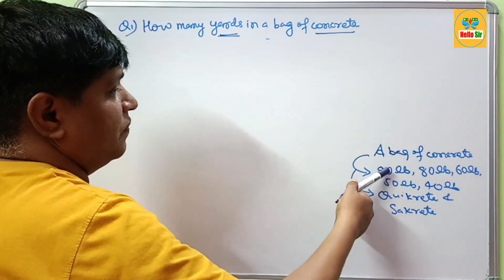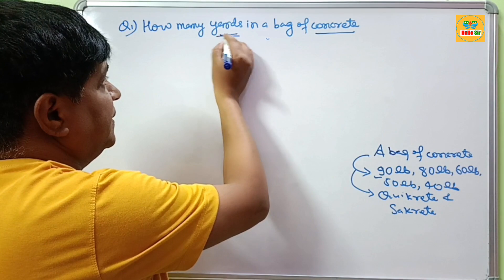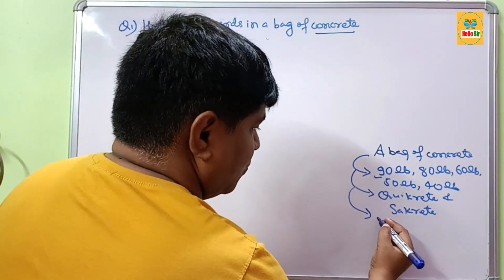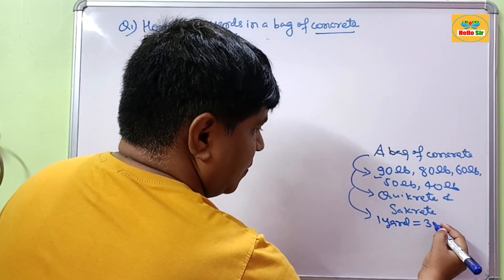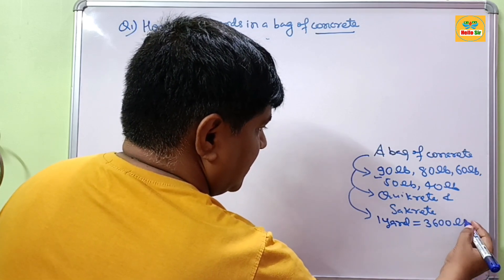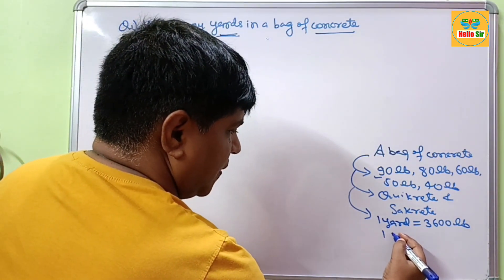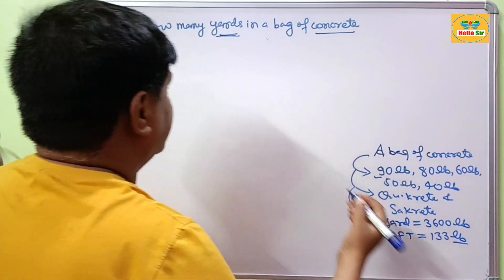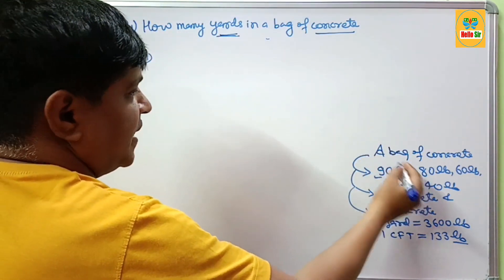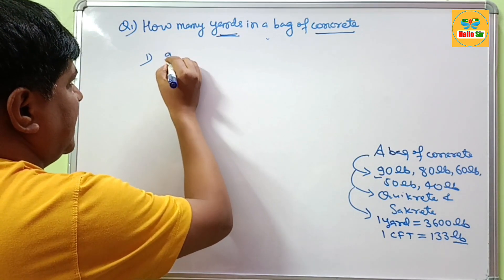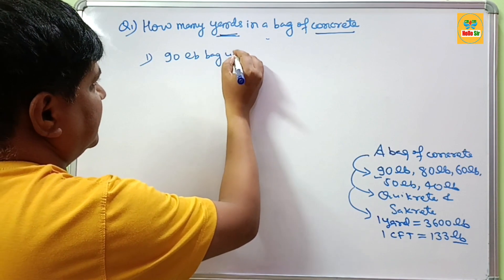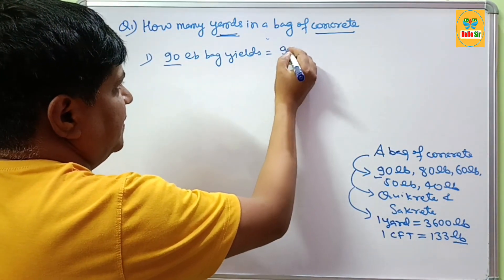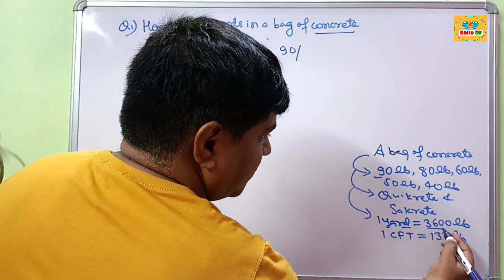You have to find out the weight of concrete bags in yards — that means finding the volume of a bag of concrete in yards. One yard of concrete weighs about 3600 pounds, and one cubic foot of concrete weighs about 133 pounds. You can solve this by dividing the bag weight by the weight of one yard of concrete, which is 3600.